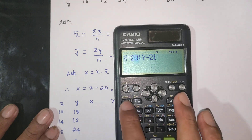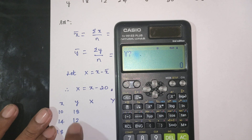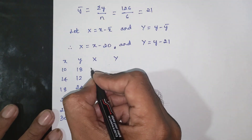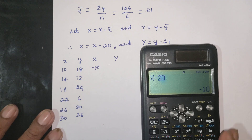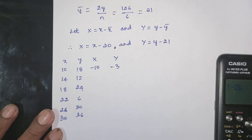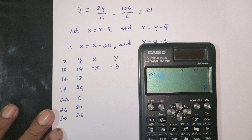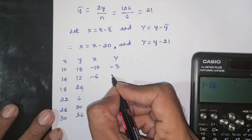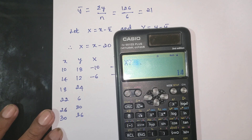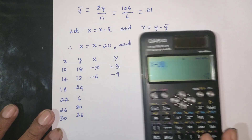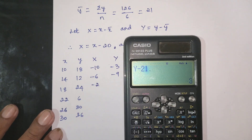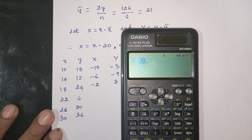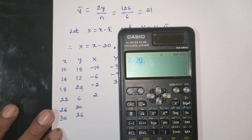Now calculate the deviations. For x value 10, y value 18: X = 10 - 20 = -10, Y = 18 - 21 = -3. For x value 14, y value 22: X = 14 - 20 = -6, Y = 22 - 21 = -9. For x value 18, y value 24: X = 18 - 20 = -2, Y = 24 - 21 = -3. For x value 22, y value 6: X = 2, Y = -15.